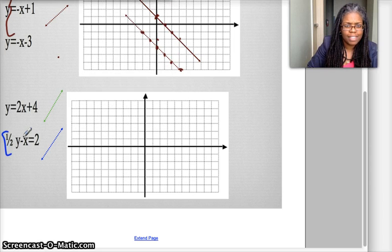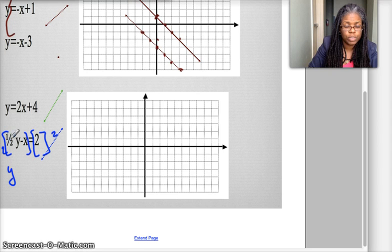And what I'll do is, that 1 half is bothering me, so I'm going to multiply both sides of the equation by 2. And then once I do that, distributive property over here gives me y, because 2 times 1 half is 1. So that's 1 y minus 2x is equal to 4.